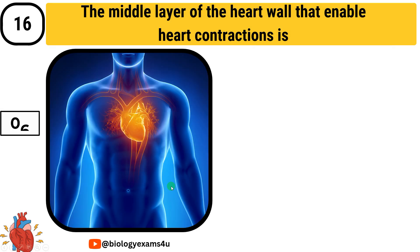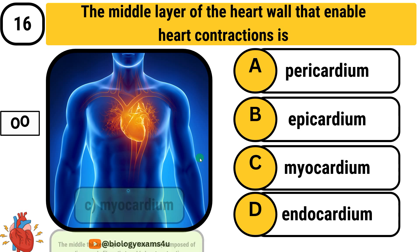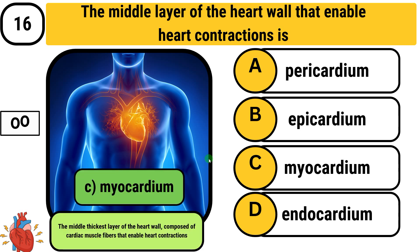Question number 16: The middle layer of the heart wall that enables heart contractions is — Option A: pericardium. Option B: epicardium. Option C: myocardium. Option D: endocardium. The answer is myocardium. The myocardium is the middle and thickest layer of the heart wall, composed of cardiac muscle fibers that enable heart contractions.